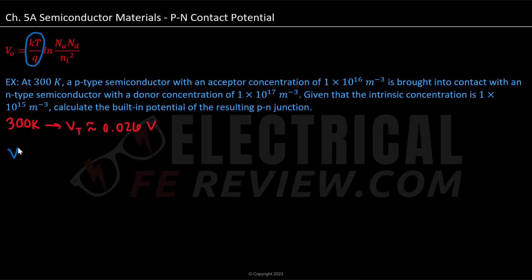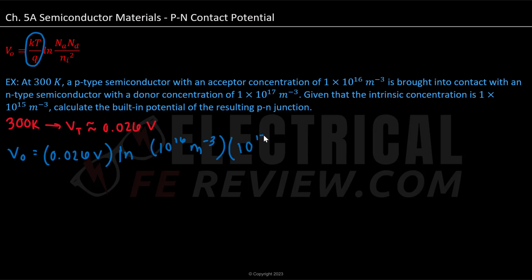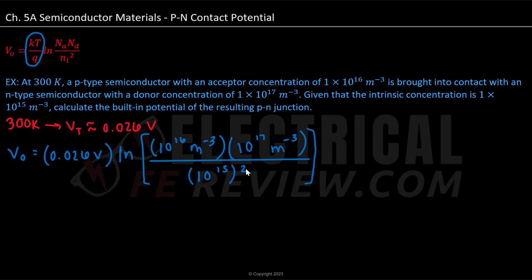Setting up our formula, the built-in potential equals our thermal voltage, 0.026 volts, times the natural log of our acceptor concentration — keeping just 10¹⁶ m⁻³ — multiplied by our donor concentration, 10¹⁷ m⁻³, divided by our intrinsic concentration squared, (10¹⁵)². Before taking the natural log, let's simplify inside the brackets first.